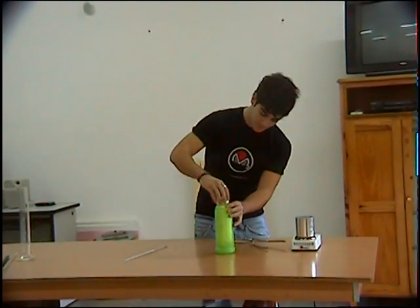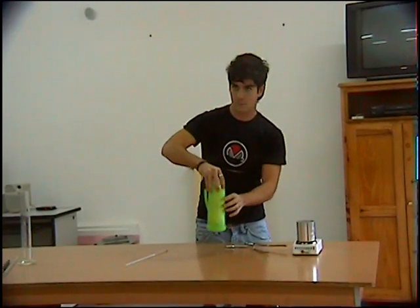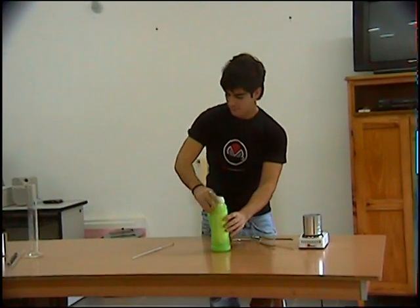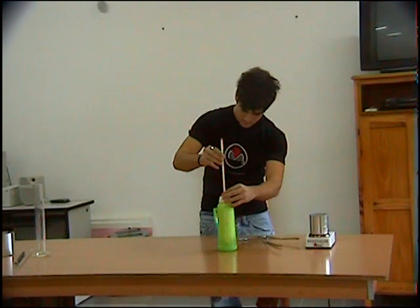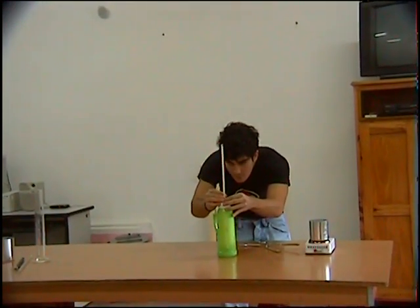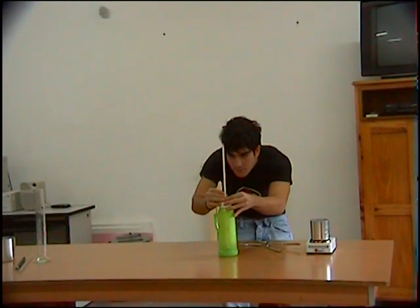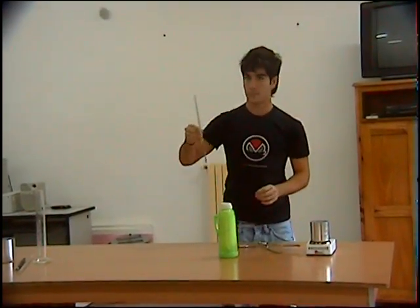Chiudiamo bene il calorimetro e mescoliamo il contenuto per favorire lo scambio di calore tra le masse. Inseriamo il termometro nell'apposito foro situato nel coperchio del calorimetro e registriamo la temperatura dell'equilibrio. Nel nostro caso è risultato essere 48,6 gradi centigradi.